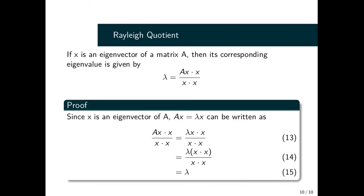The Rayleigh Quotient says if x is the actual eigenvector of matrix A, then its corresponding eigenvalue can be obtained as λ = (Ax · x)/(x · x). To prove it, we know Ax can be expressed as λx. From equation 13, we get equation 14, where the numerator and denominator cancel out, leaving us with λ.